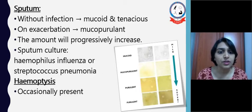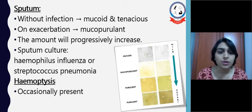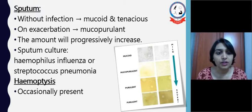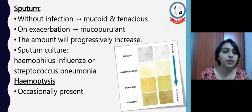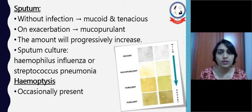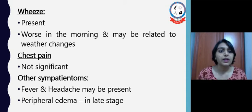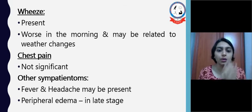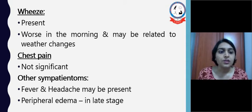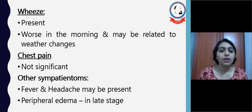Sputum: without infection it may be mucoid or tenacious; on exacerbation due to infection it becomes mucopurulent, and the amount progressively increases. In sputum culture, we may find Haemophilus influenzae or Streptococcus pneumoniae. Hemoptysis is occasionally present, meaning blood in the sputum. Wheeze is present because of narrowing of the airway during expiration — audible wheeze may occur in the morning and may also be related to weather changes.